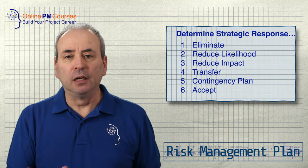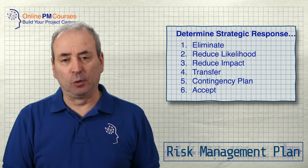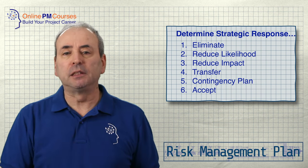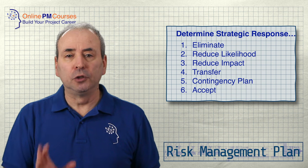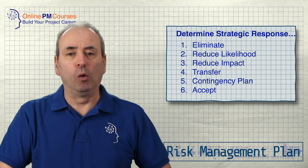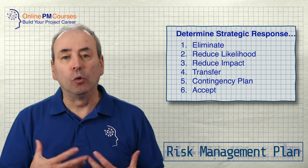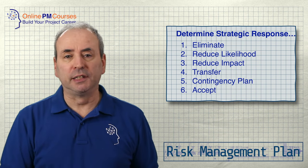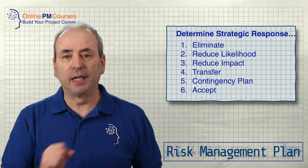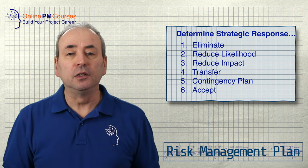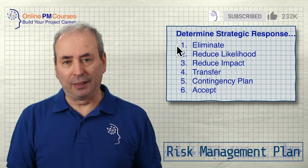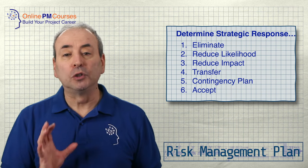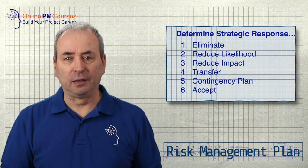For big risks you're going to want to combine two, three or even more strategic approaches in your response. Those strategic responses are: to eliminate the risk, to reduce its likelihood, to reduce its impact, to transfer the risk, to build a contingency plan, or to accept the risk and do nothing.